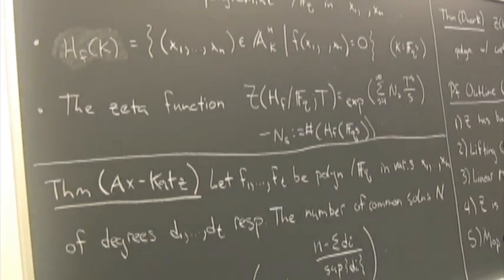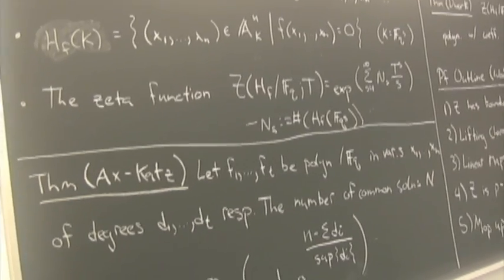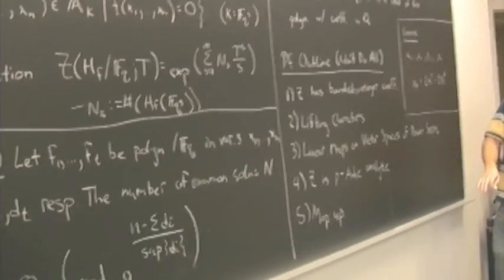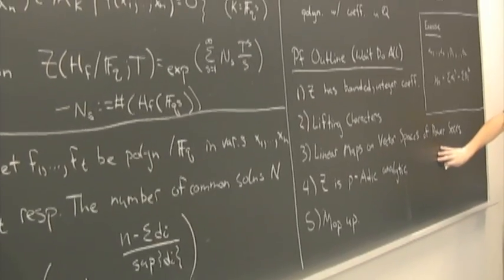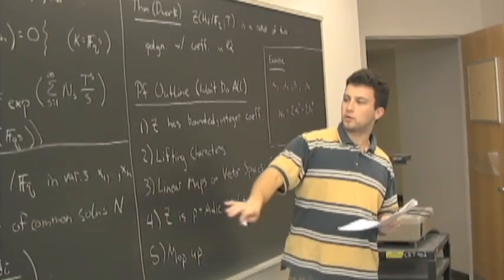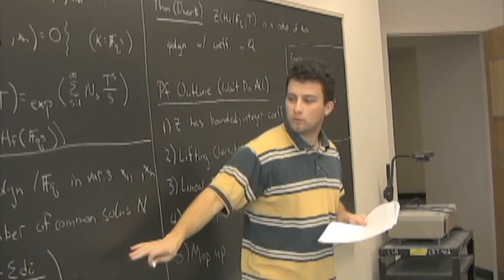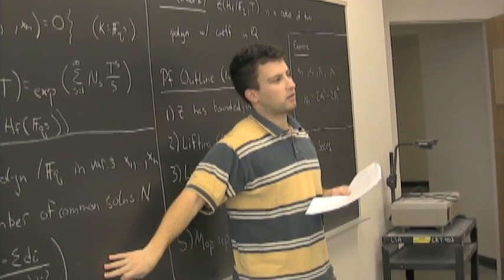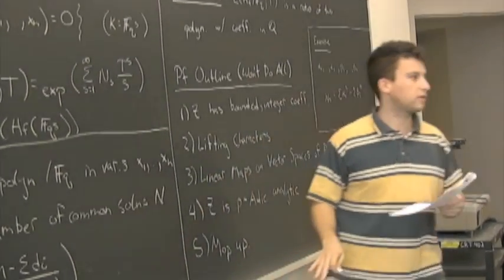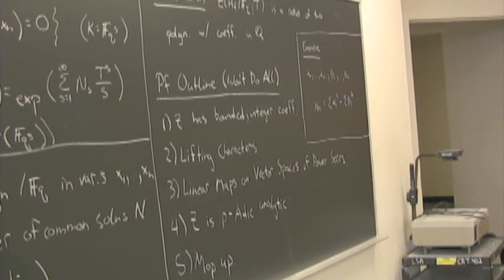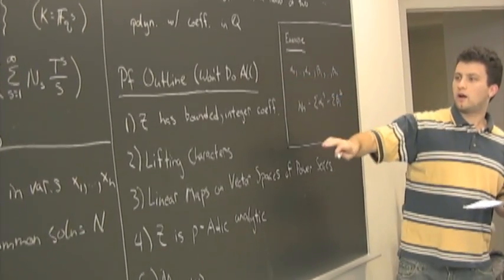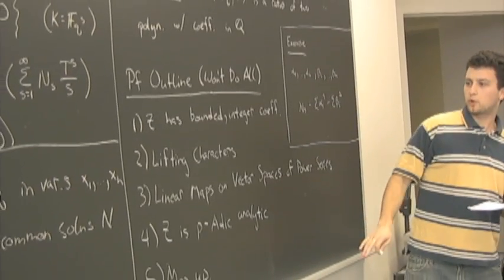I want to talk about the proof of this result. I've got an outline right here; I'm not going to get to everything. Something I want to emphasize is that later on, some ideas from Dwork's proof were unbundled to prove results about congruence properties of solutions of polynomials over a finite field.